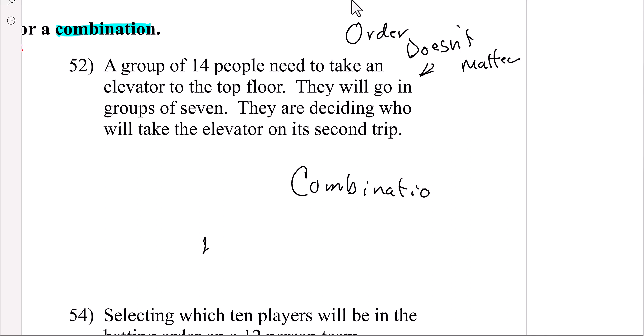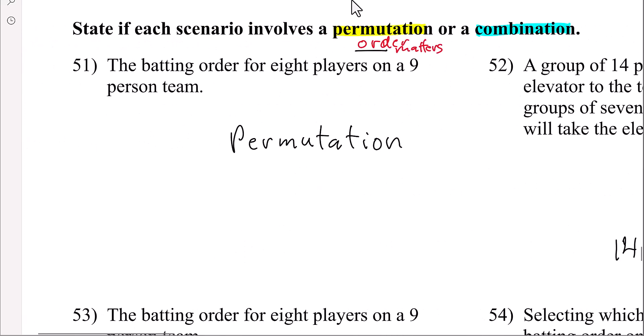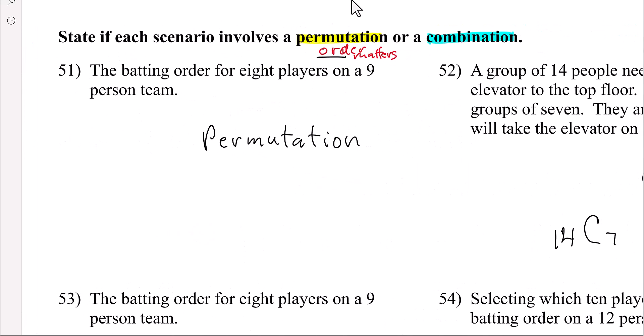So this would be, if you were to type into your calculator, 14 and then 14 combination in groups of seven. Over here it would be nine permutation and then eight.